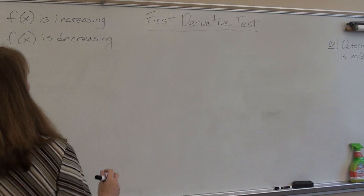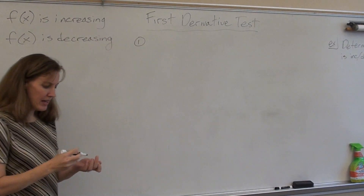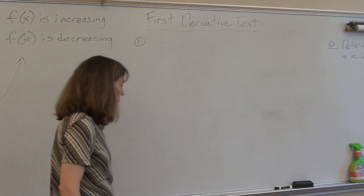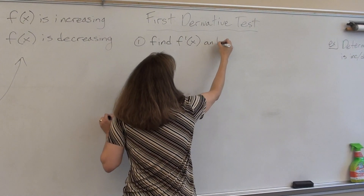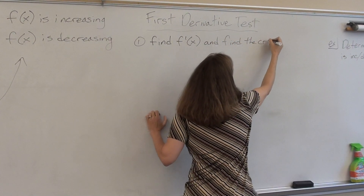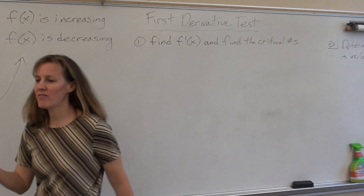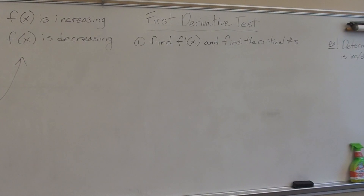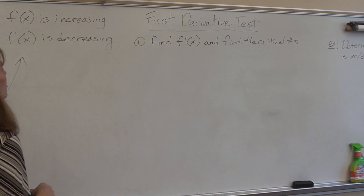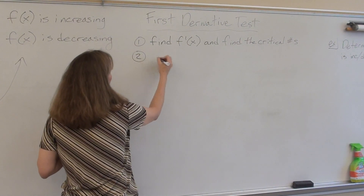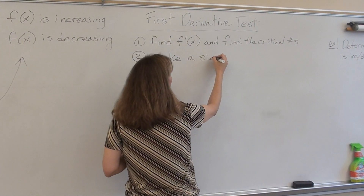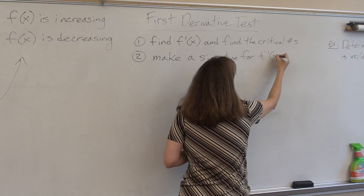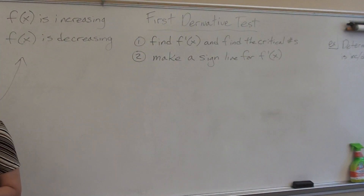All this information leads us into the first derivative test for relative extrema. The first derivative test is a set of steps. What would be a good thing to start with? Find the derivative. So step one is to find f prime and find the critical numbers — values of x in the domain where f prime is either zero or undefined. Step two is to make a sign line for f prime. We care about the signs of the derivative, not the signs of f.